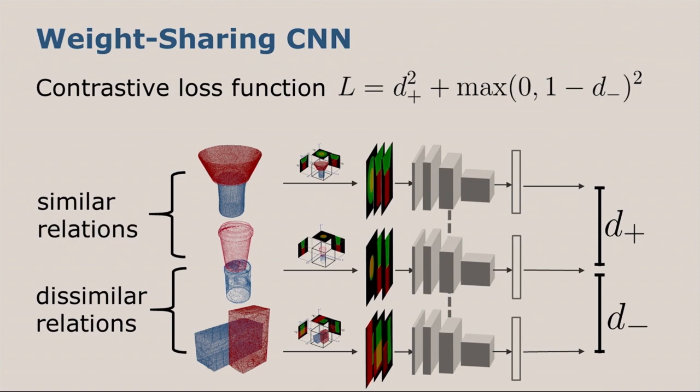We compute for each of these scenes the corresponding embedding, which are these three boxes on the right. Now we can compute the distance between the embeddings of the similar scene and the reference scene and the dissimilar scene and the reference scene. With a contrastive loss function, we now achieve the goal of pulling together similar scenes, so we minimize the distance d+, and by pushing the dissimilar scenes towards the margin of one.